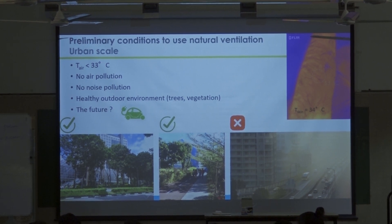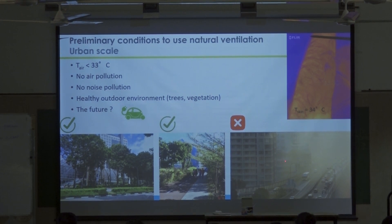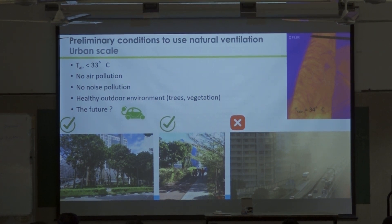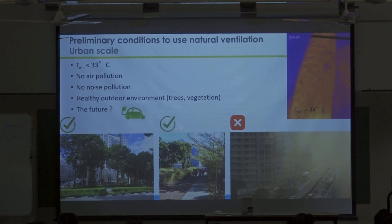You have to have trees around the building. This is a picture of Ahmedabad, and as you can clearly see this building cannot work with natural ventilation because the pollution is too important. An optimistic view maybe is electric cars, electric bikes, electric motorbikes — they don't generate any air pollution, they don't generate any noise.